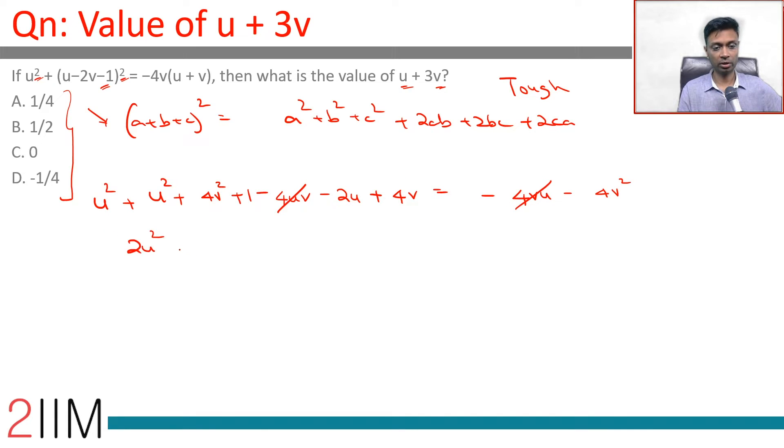This is 2u square plus 4v square minus 2u plus 4v plus 4v square plus 1 equal to 0. I am bringing everything onto the same side.